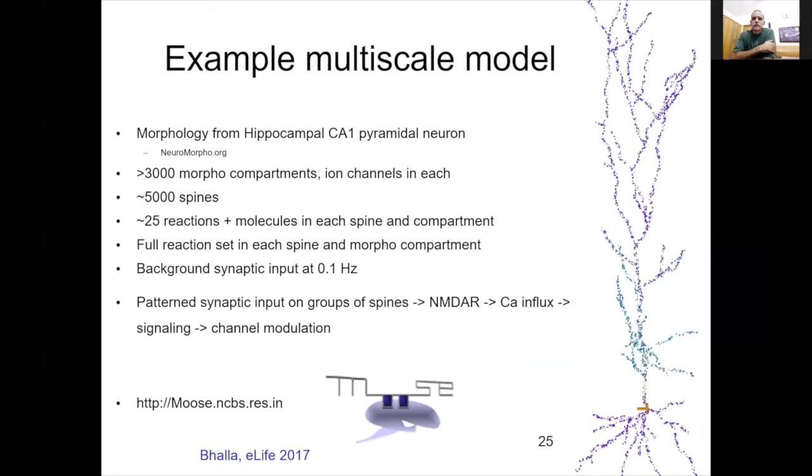Here's an example of the kinds of models that one can undertake with MOOSE. This was a detailed morphology from NeuroMorpho.org. It has some 3,000 compartments in the original, to which we added some 5,000 spines. Each one of these spines, each one of the compartments has some 25 reactions and molecules. Basically every single one of them is adorned with distinct reactions and molecules. There's background synaptic input, there's pattern synaptic input that comes in, activates the receptors, calcium comes in, signaling happens, channel modulation happens, and this is happening throughout the neuron. And of course this is what happens throughout the neuron and all of the neurons in your brain.